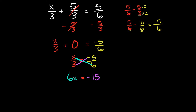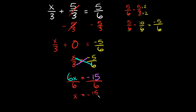So x times 6, or in other words 6x, is going to be equal to 3 times negative 5, which is negative 15. I'm almost done — now I just have 6x equals negative 15. To solve for x, since I'm multiplying, I'm going to divide by whatever I'm trying to get rid of, which is 6, because I'm trying to get x by itself. If I divide by 6 on this side, I also have to divide by 6 on that side, and these 6s cancel out.